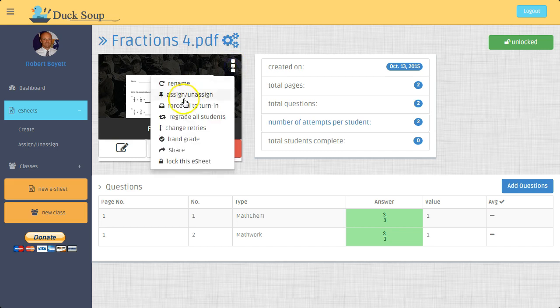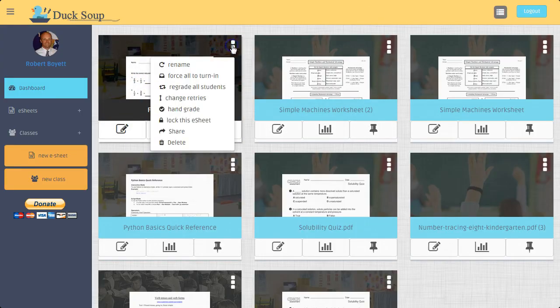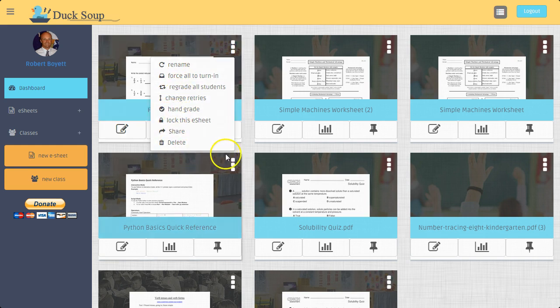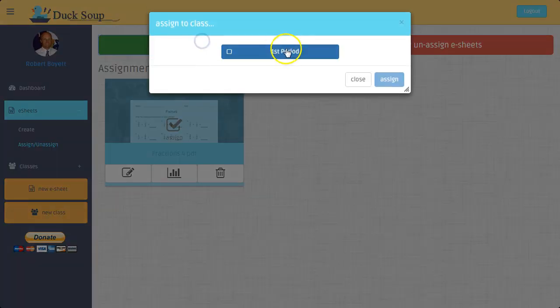Your teachers can go to hand grade, and I'll assign that. So let's assign this real quick—right there, click assign this worksheet. Oh sorry, it's right here, assign this worksheet. I'll just assign to my first period.